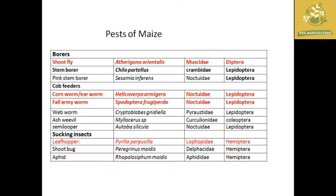While talking about the pests of maize, the categories are borers, cob feeders, and sucking insects. Let's see them one by one — specifically those that were not covered under the pests of sorghum.